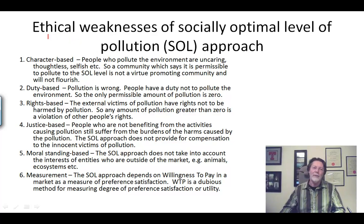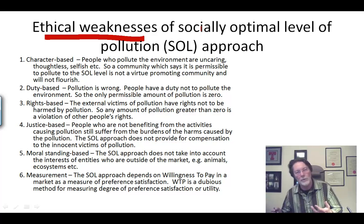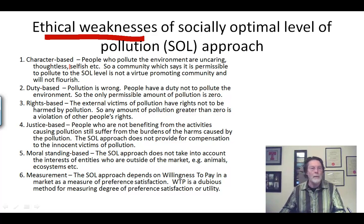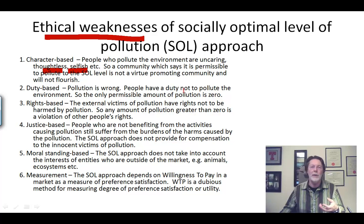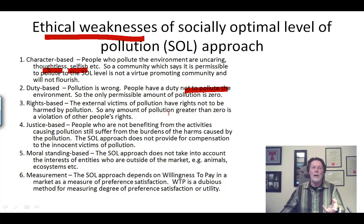This view — the socially optimal level of pollution view — has been criticized from various points of view. From a character-based approach, the people who pollute are thoughtless and selfish. From a duty-based point of view, pollution seems to be wrong, so people have a duty not to pollute and the only permissible amount would be zero. From a rights-based point of view, the external victim of pollution has a right not to be harmed, so any amount of pollution that harms anybody is a violation of other people's rights.